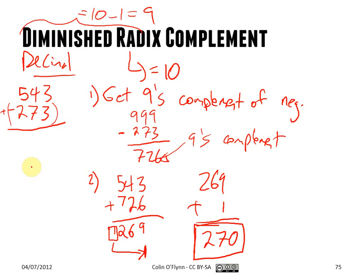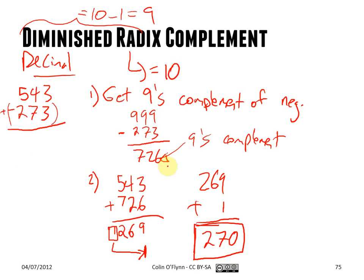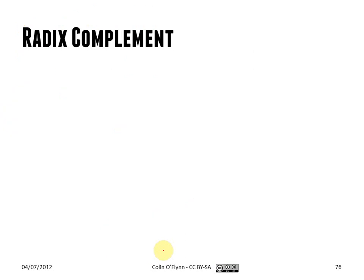We can use this with binary systems. Binary is base 2, so the diminished radix complement would be the 1's complement. But there's an even easier way — remember we had this issue where we have to get this carry of 1 and take it over. So we can use the radix complement instead. For decimal this would be the tens complement, and for binary we'll have what's called the 2's complement.